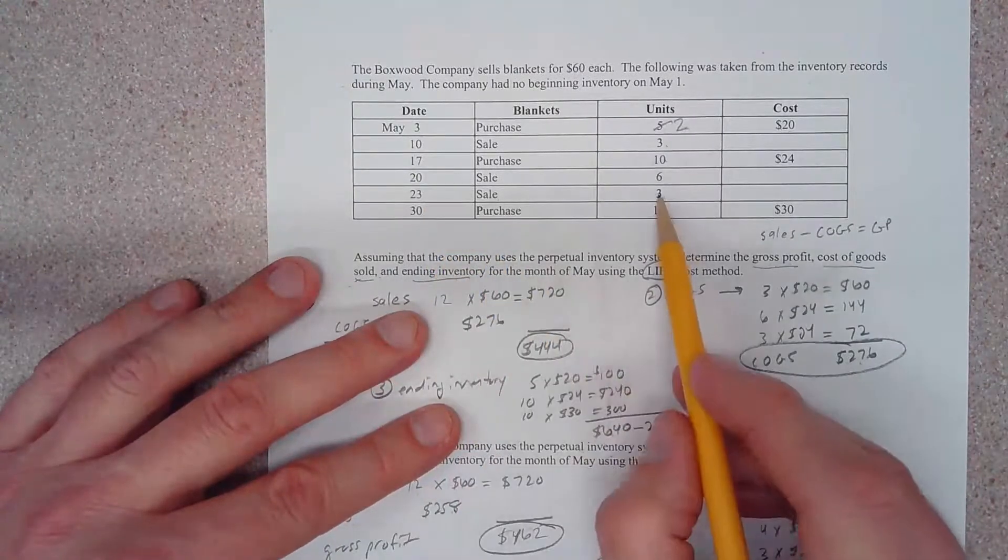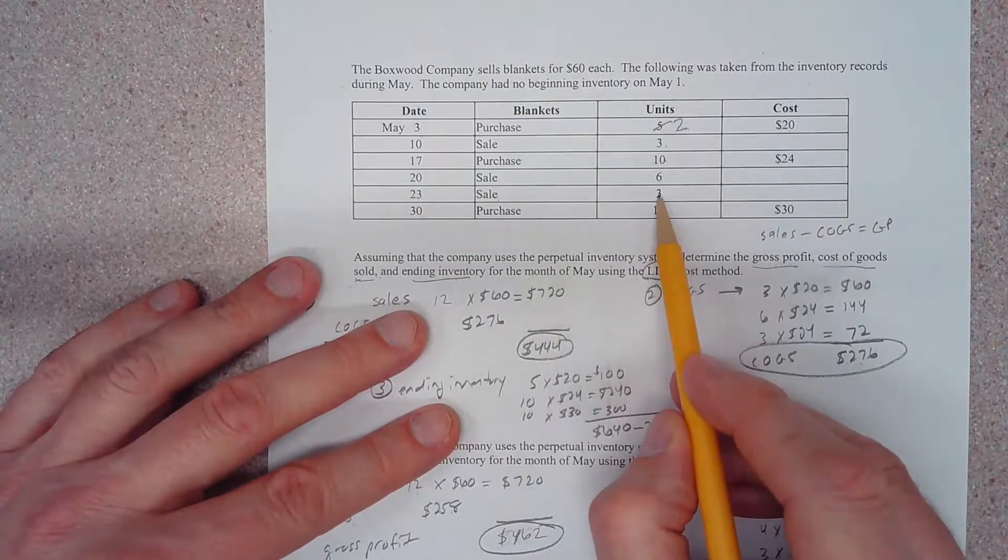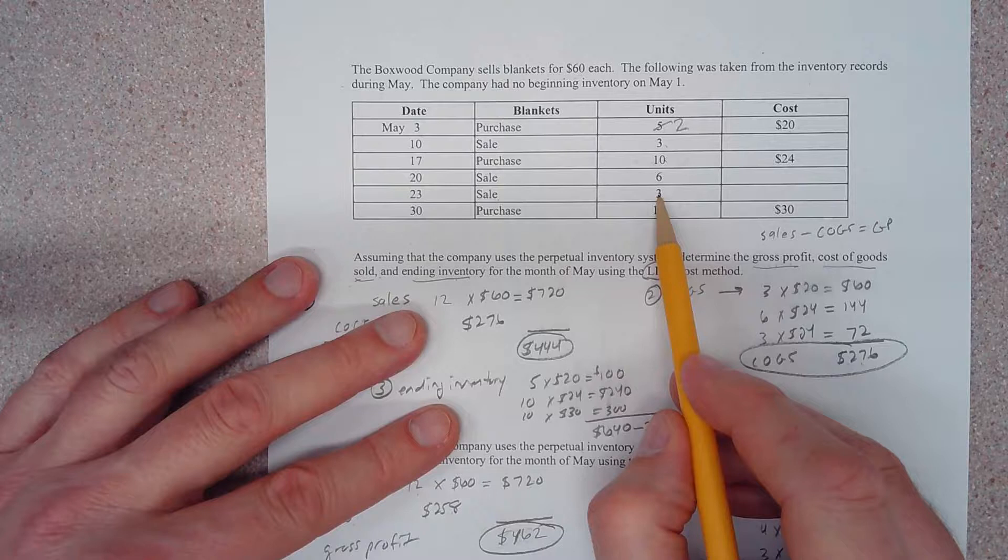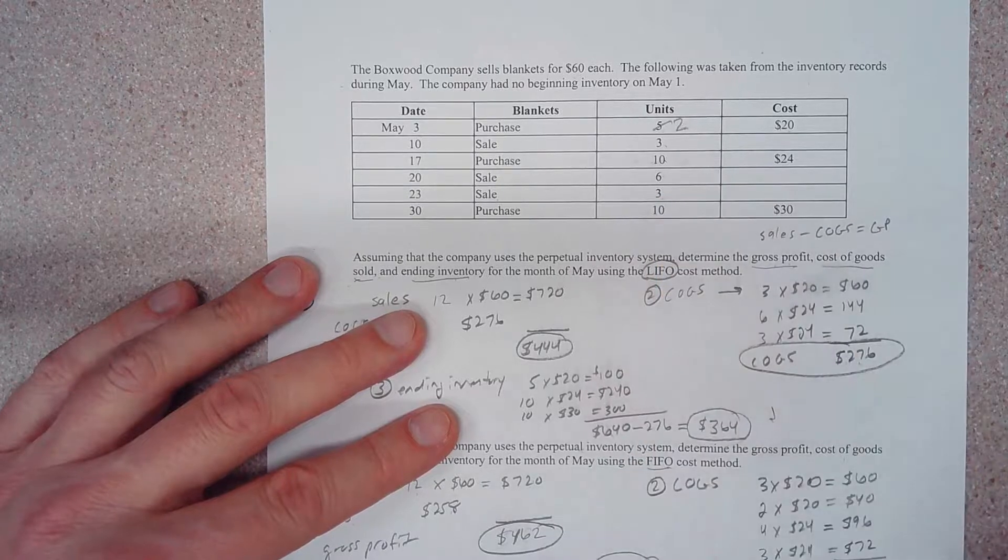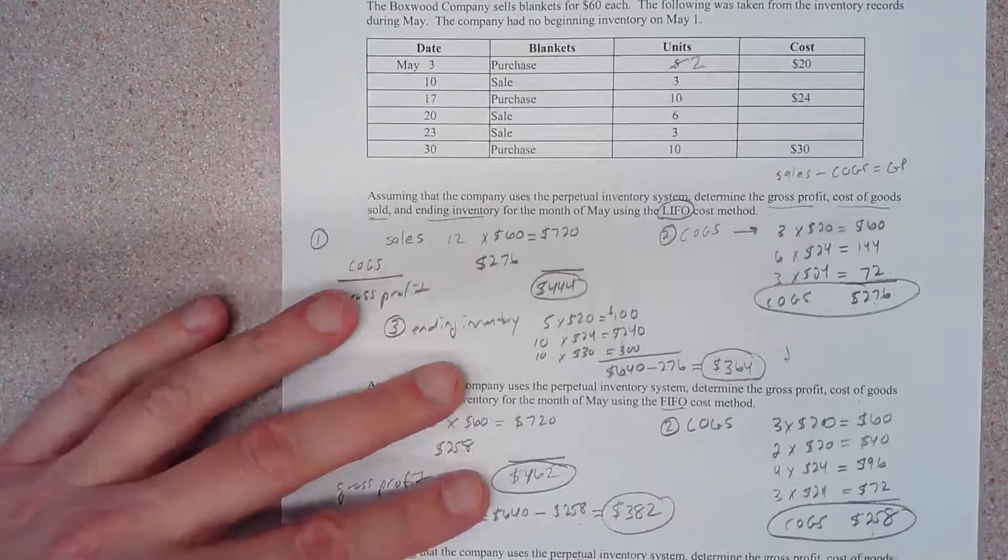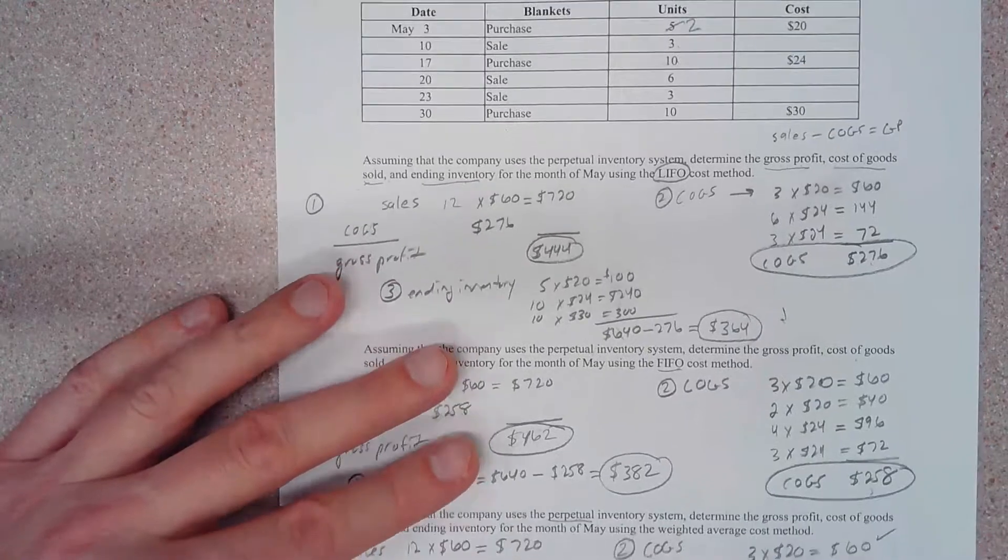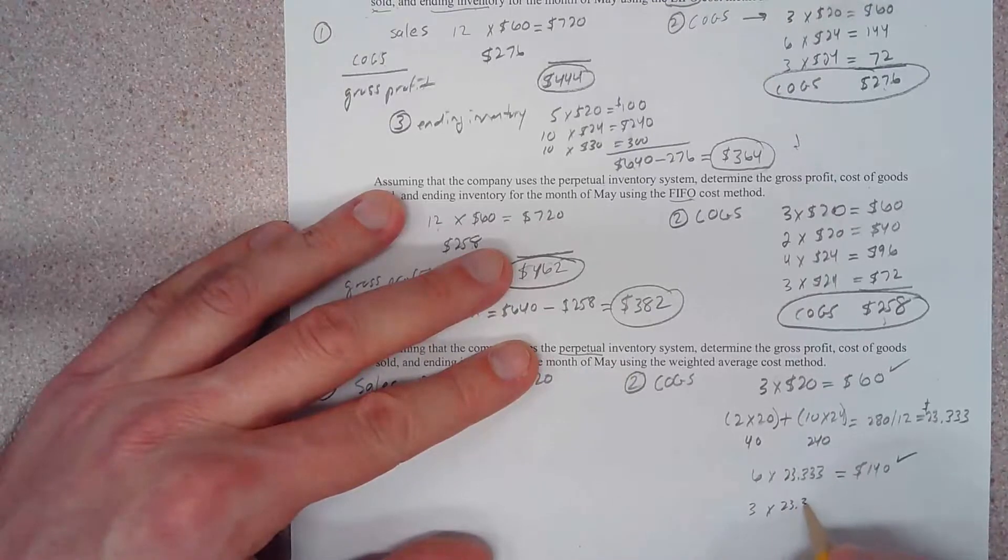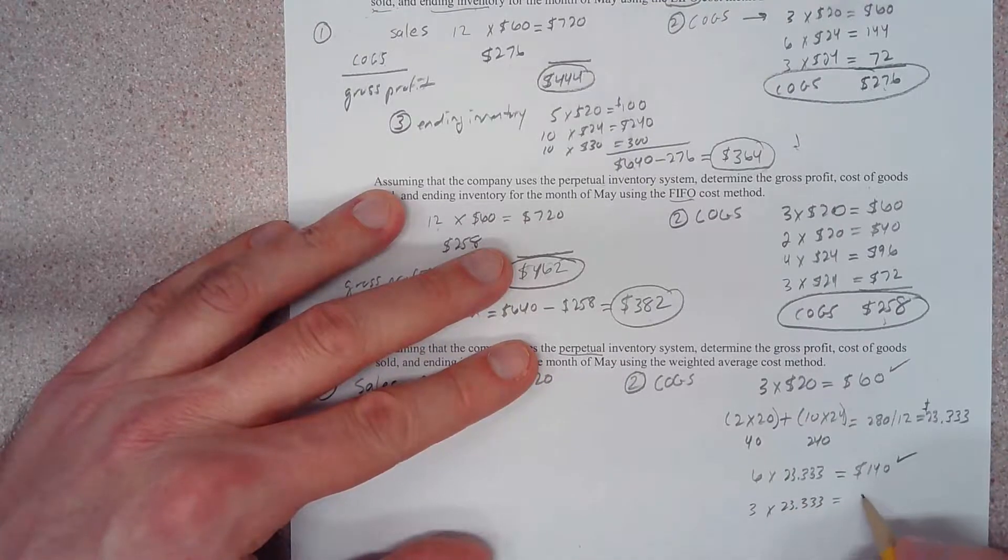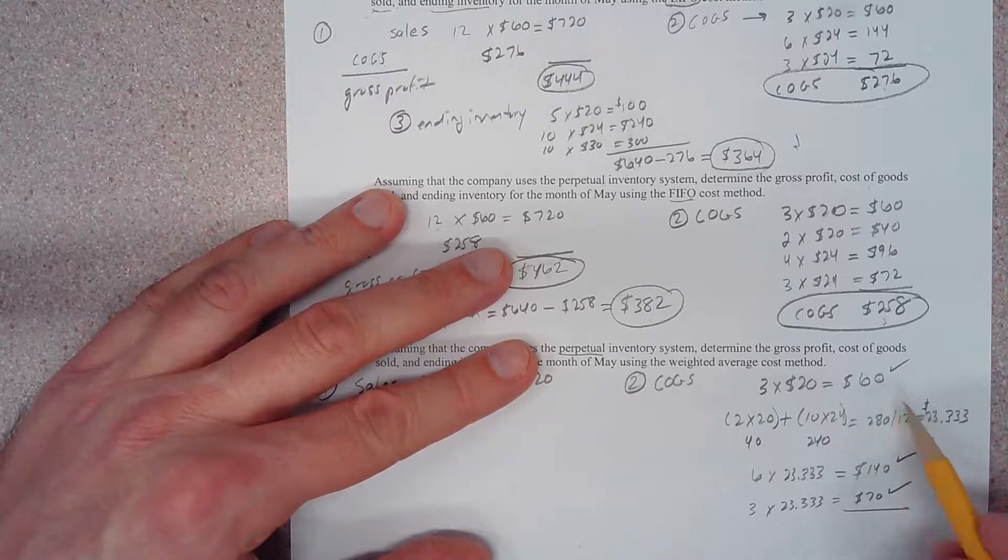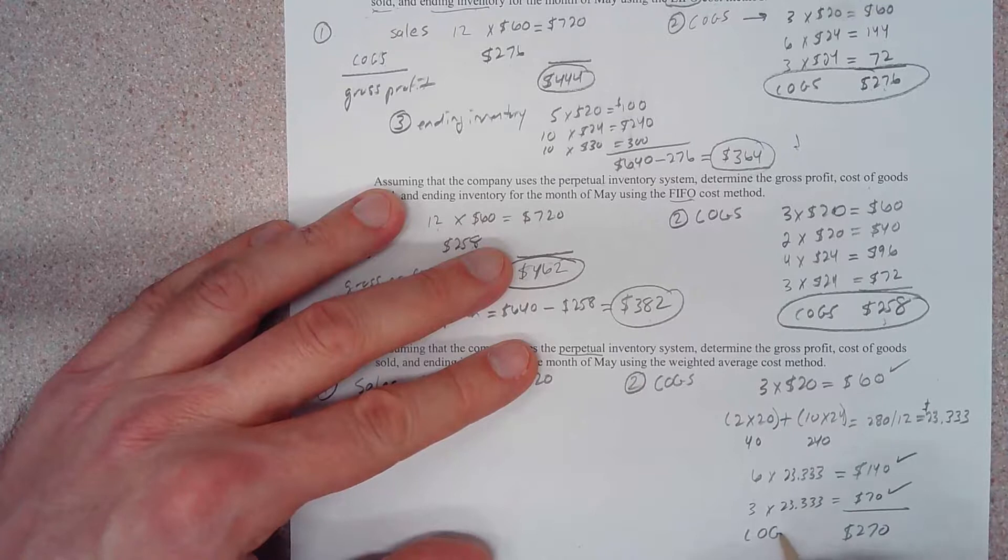We made another sale of 3 units on the 23rd. So all we do is come down here and we have 3 times $23.33 again, and that's going to give us $70. If we add the $60 plus the $140 plus the $70, we come up with $270 cost of goods sold.